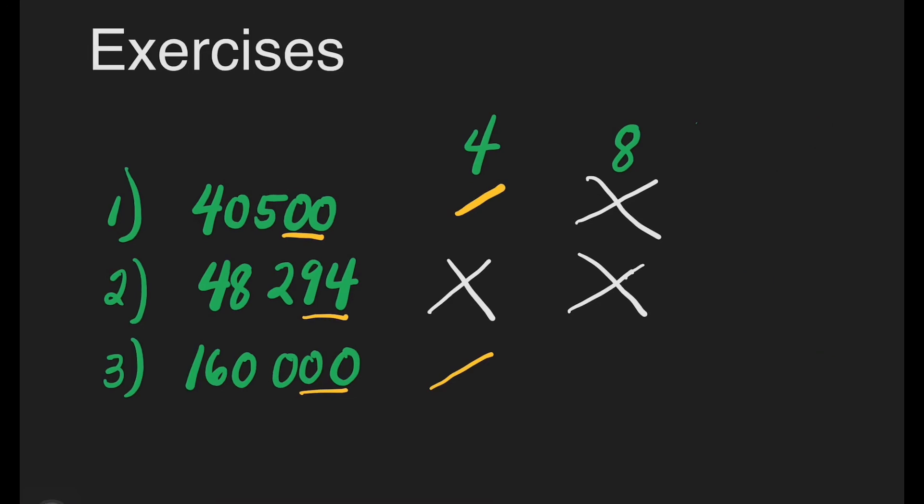For the last number, 160,000. Is it divisible by 8? Yes, because it ends with 3 zeros. Automatically, that is divisible by 8.